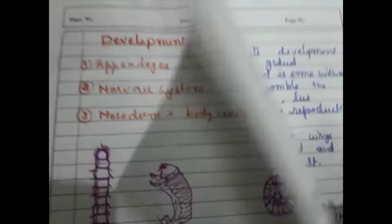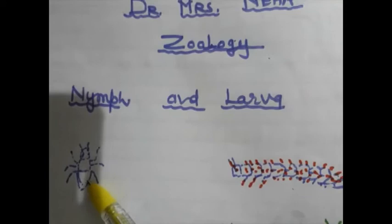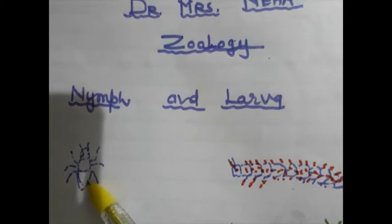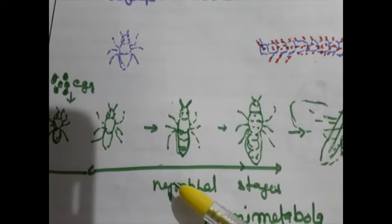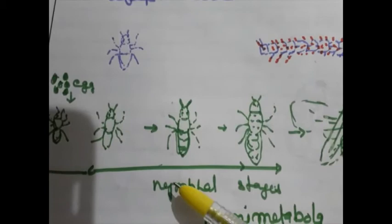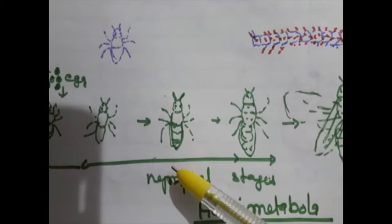In hemimetabolous insects, nymphal stages are present. Development of immature stages is gradual after hatching of egg. The feeding habit and food is the same with adult, similar with adult.